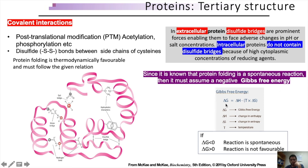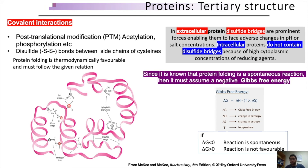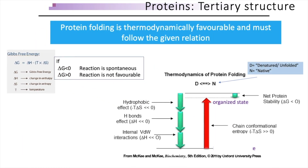This discussion requires the thermodynamics of protein folding. Since protein folding is a spontaneous reaction, it must assume a negative Gibbs free energy. The Gibbs free energy equation is: ΔG = ΔH − TΔS, where ΔG is the Gibbs free energy, ΔH is the change in enthalpy, ΔS is the change in entropy, and T is temperature. If ΔG is less than zero, the reaction is spontaneous and that folding conformation is favorable. If ΔG is greater than zero, that conformation is not thermodynamically favorable. The very subtle balance of these forces decides the overall conformation of the protein.